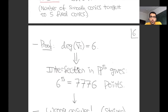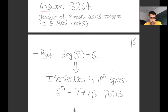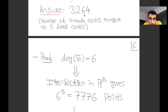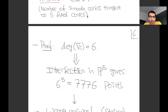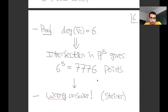I have five of these degree-six hypersurfaces and I want to intersect them. Intersecting five degree-six hypersurfaces in P5 gives me 6^5, which is 7,776 points. The eagle-eyed among you may have noticed this number is not the same as 3,264—this is the wrong answer. The person who got it wrong was Steiner, who was the first to pose this question; he gave 7,776 as the answer, which is wrong.